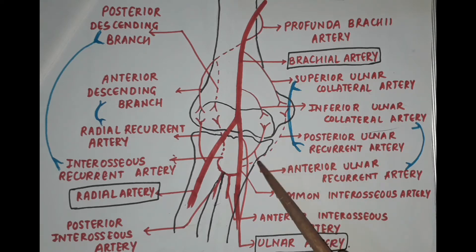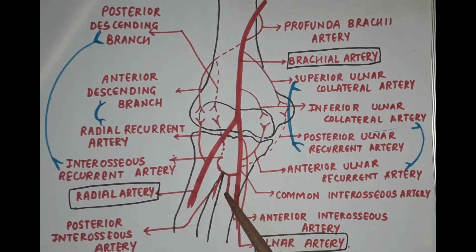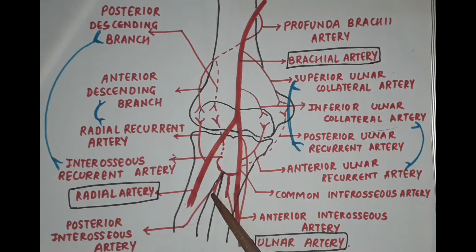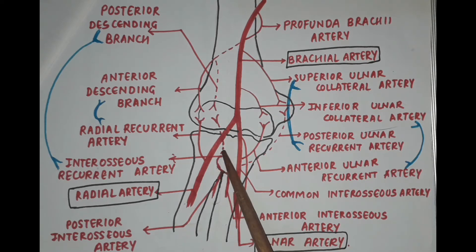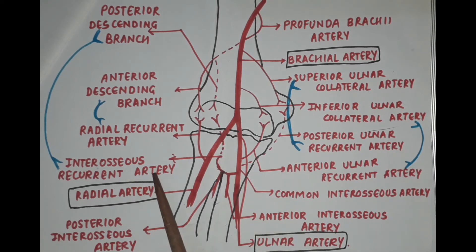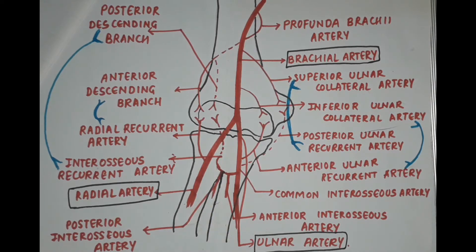The ulnar artery further continues as the common interosseous artery, which divides into the anterior interosseous and the posterior interosseous artery. The posterior interosseous artery gives off a branch named the interosseous recurrent artery, which takes part in the anastomosis of the elbow joint.